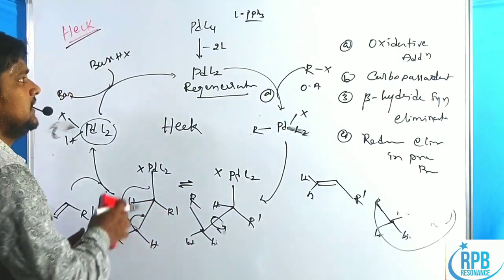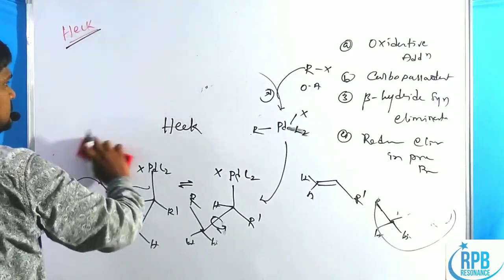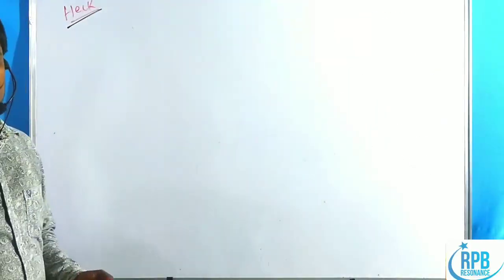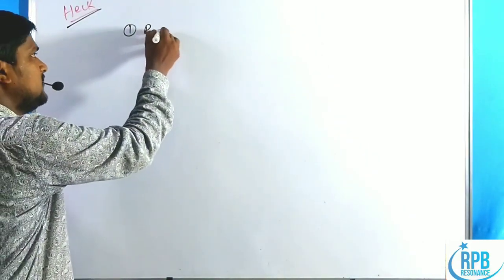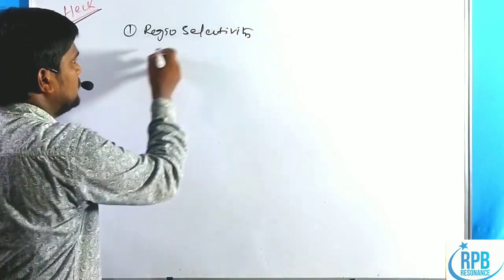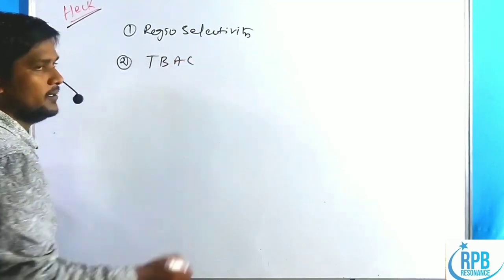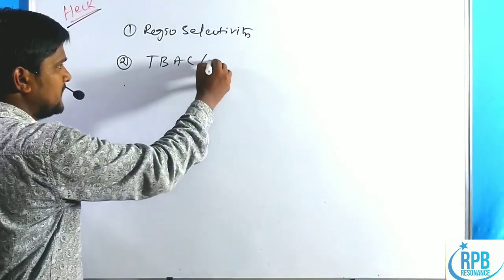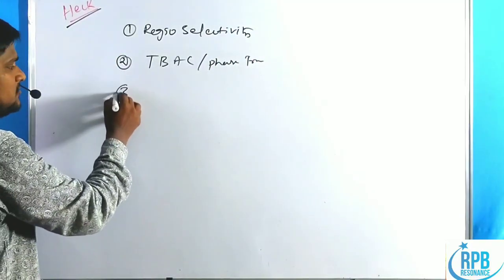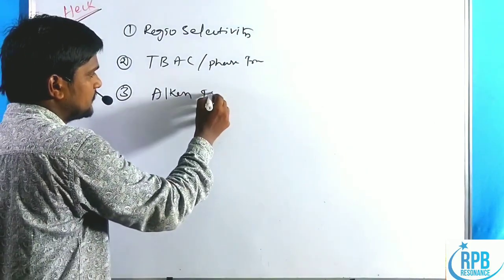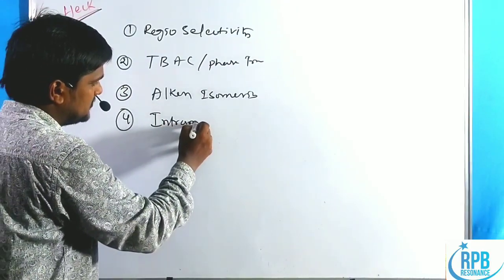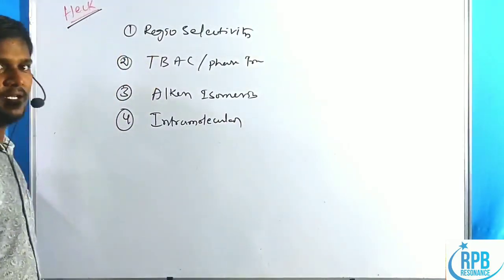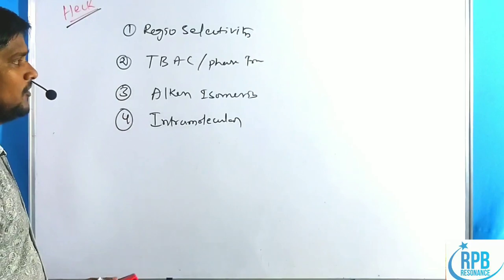Now let us discuss the applications of the Heck cross-coupling reaction. The four important applications are: (1) regioselectivity, (2) presence of tetrabutylammonium chloride (TBAC) as a phase transfer catalyst, (3) alkene isomerization, and (4) intramolecular Heck cross-coupling reaction.